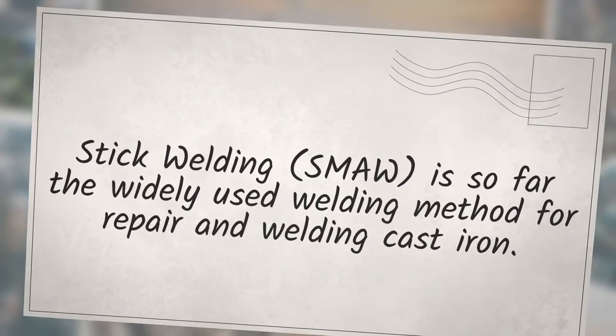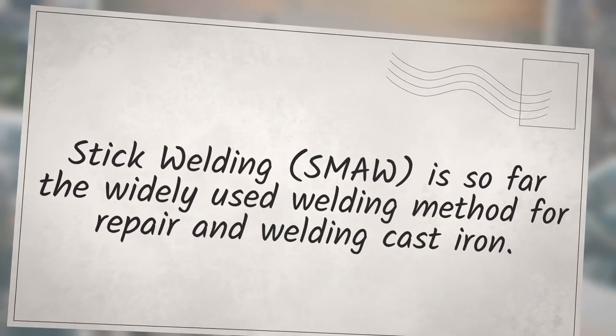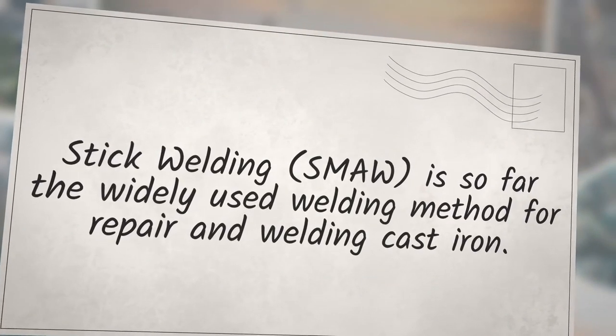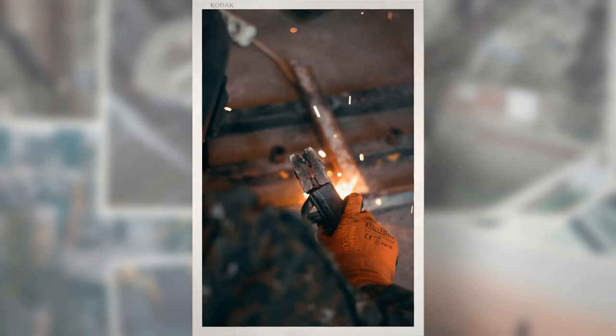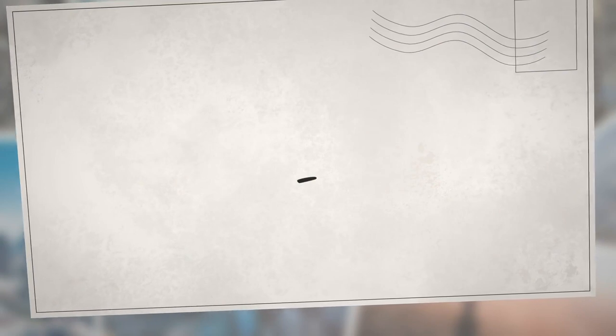Stick welding (SMAW) is by far the most widely used welding method for repair and welding of cast iron today. Welding of cast iron is also carried out using TIG, GMAW, FCAW, and by brazing.